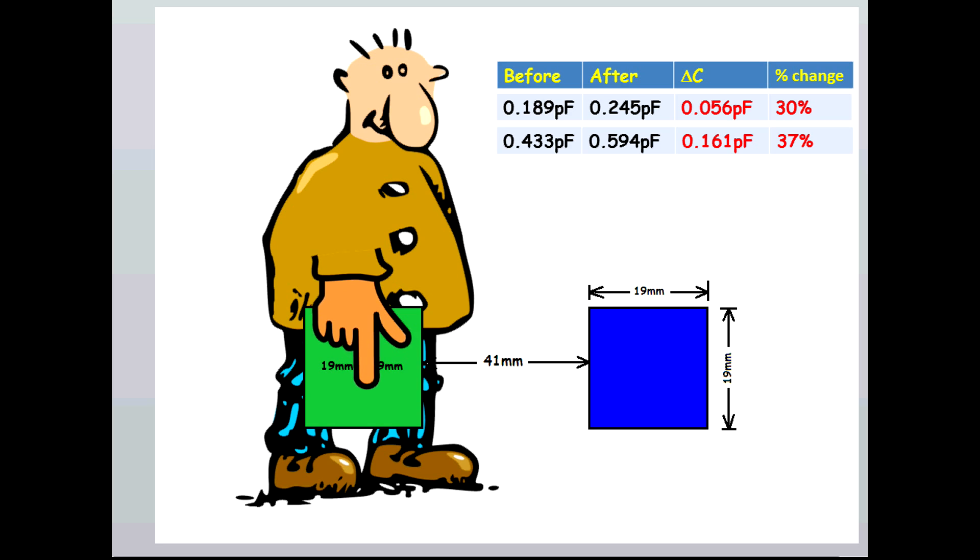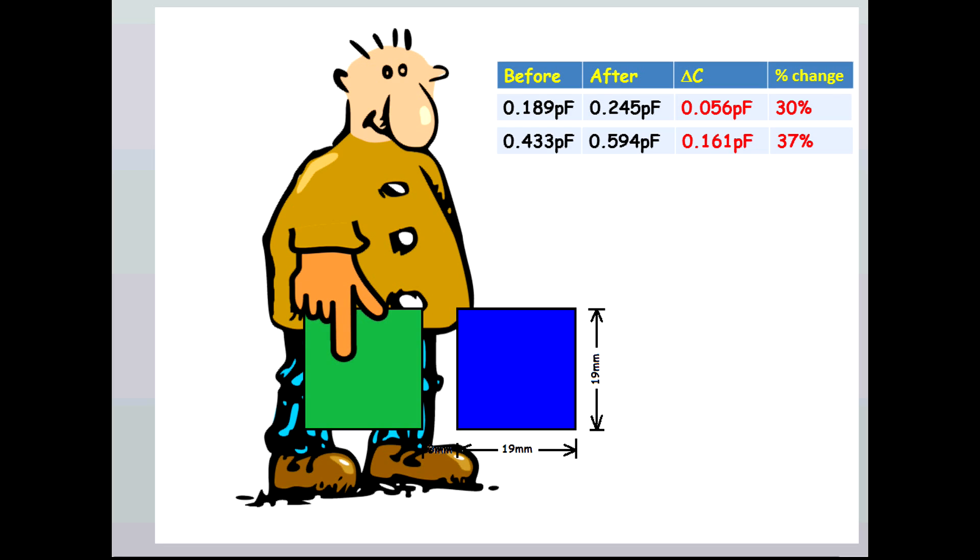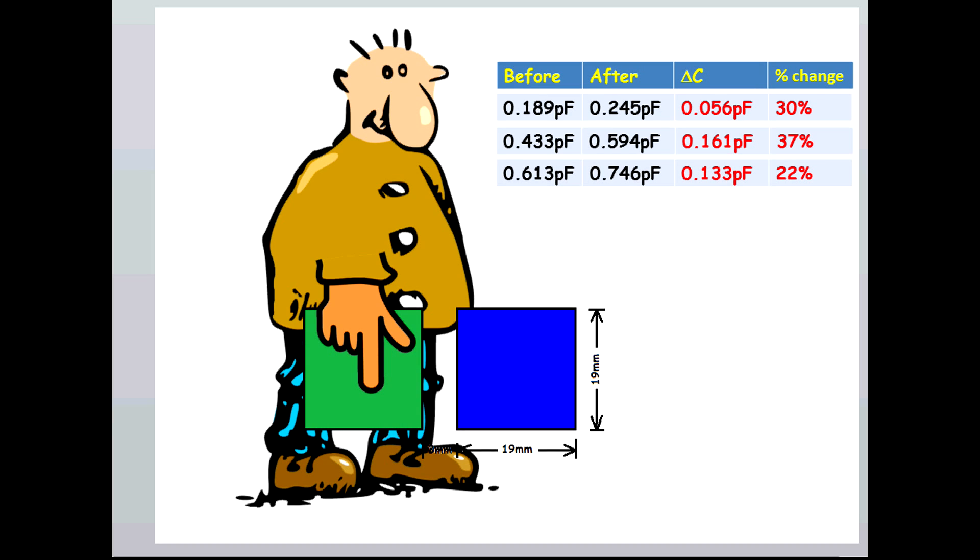If the distance between the antennas are shortened, the electric field are more confined. Although the capacitance is higher, the delta change is actually less, and make it a less effective sensor.